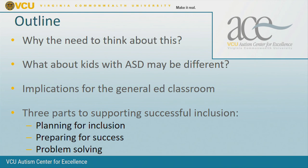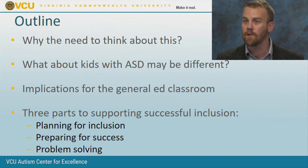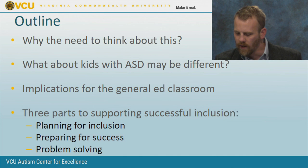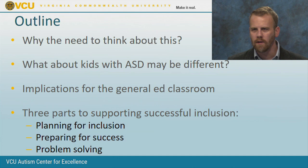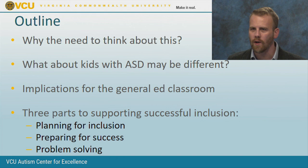Here's our outline for today. We'll talk about why inclusion is needed and why we need to think about giving special supports to students with autism — what about autism creates differences that we need to consider in a general education classroom. We'll break down supports into three steps: planning for inclusion, preparing for success, and problem solving, because we know things are going to come up.